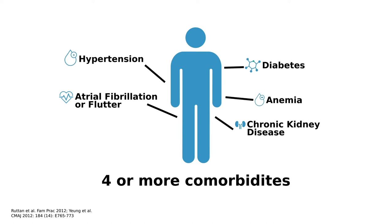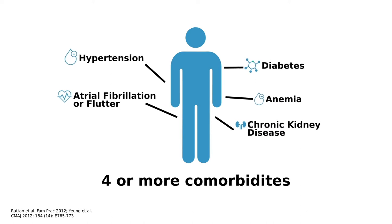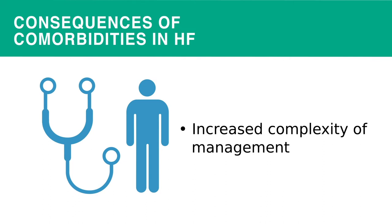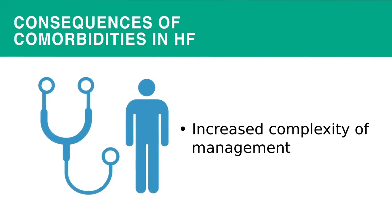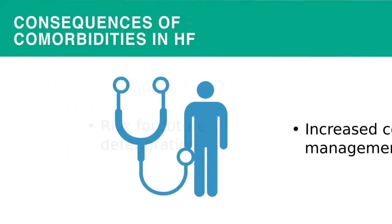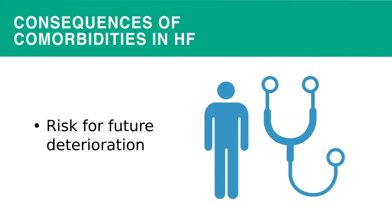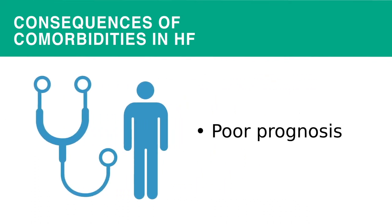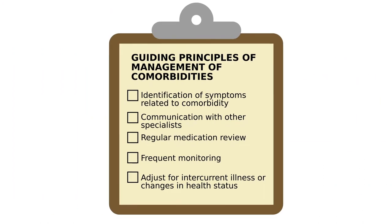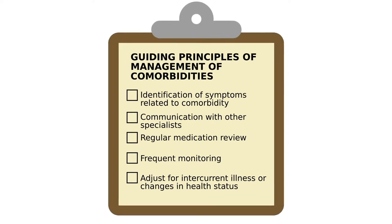The presence of multiple comorbidities signals a higher risk patient group. The increased complexity of patients and their comorbidities often confound treatment. This is even more challenging for patients with heart failure with preserved ejection fraction. Comorbid conditions become risk factors for future worsening and might contribute to clinical deterioration, complicate management and treatment, and are often associated with poor prognosis. Irrespective of the specific comorbidities, following these general guiding principles can help optimize patient outcomes.